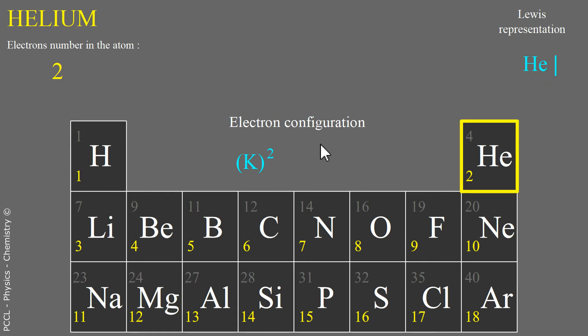This element is placed at the end of the line because the K shell is saturated. His two electrons are happy. The helium atom therefore does not react with any other atom. It forms an inert gas.